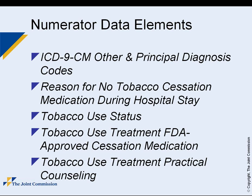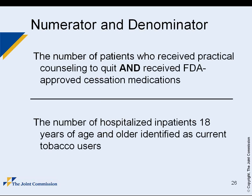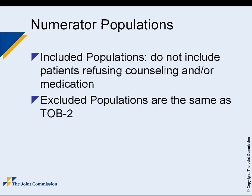Practical counseling consists of recognizing danger signals that might trigger tobacco relapse, developing coping skills, and basic quitting information. There is also an alternate measure, Tobacco Use Treatment 2A, which uses the same denominator but the numerator includes only patients who actually received both counseling and medications during hospitalization — refusals are excluded. This gives a clearer picture of the actual rate of patients receiving treatment while hospitalized.